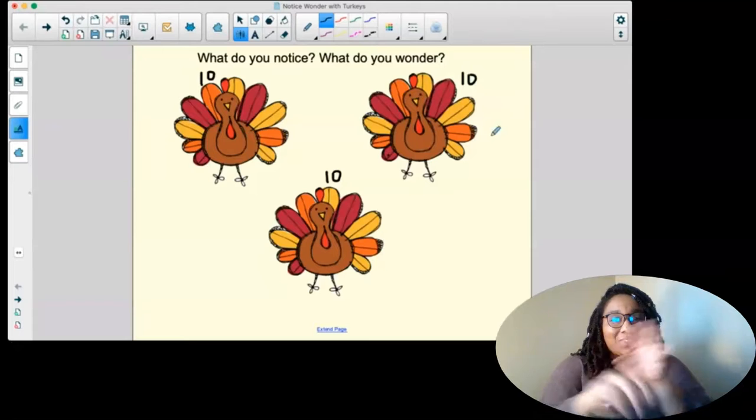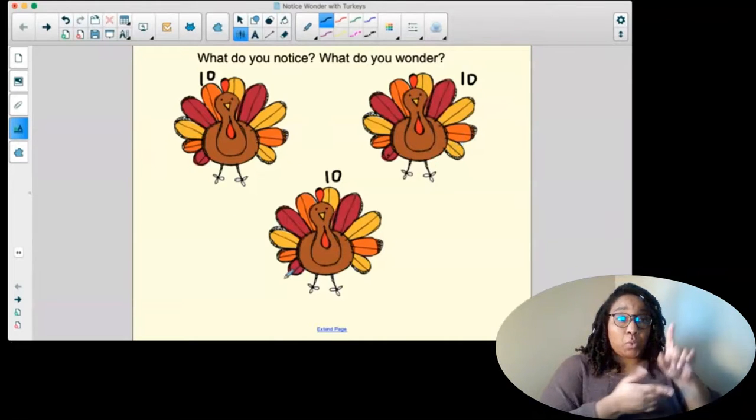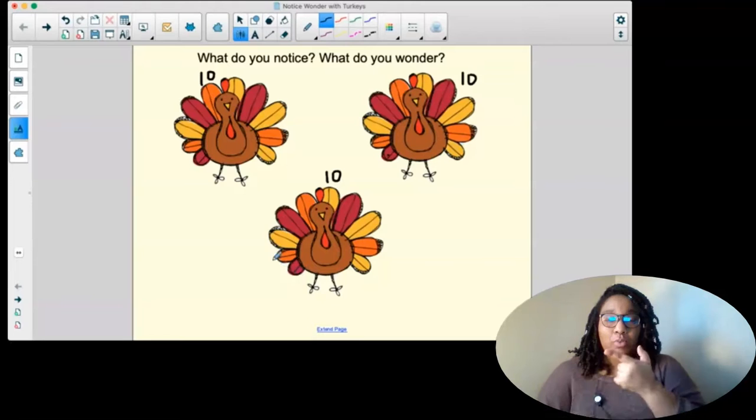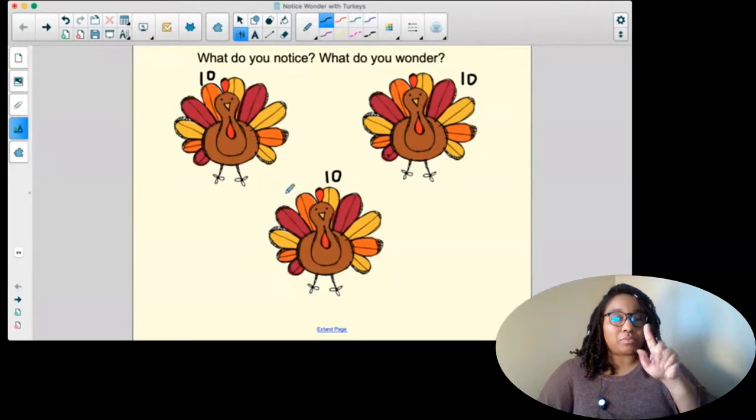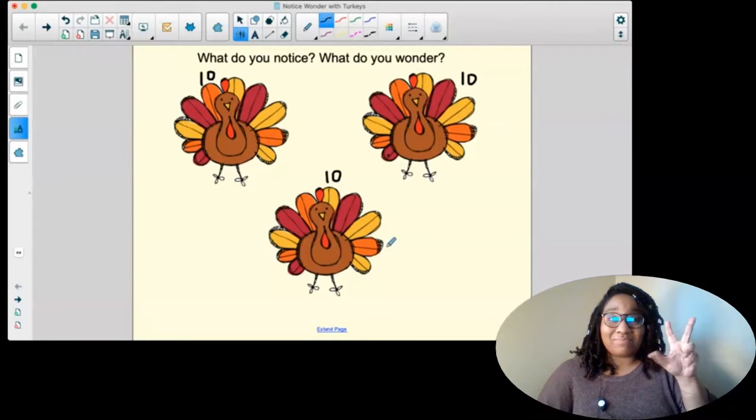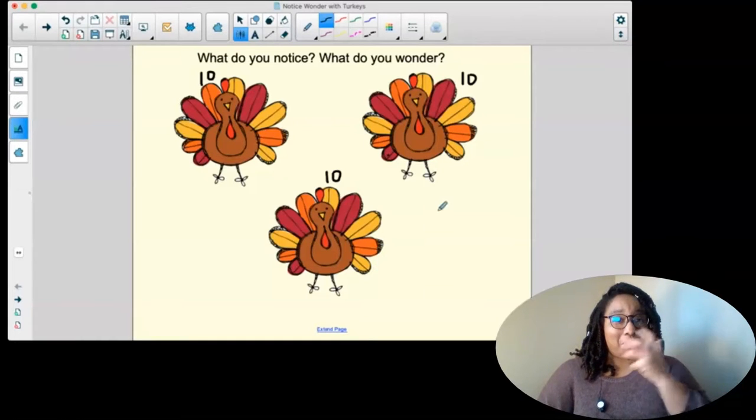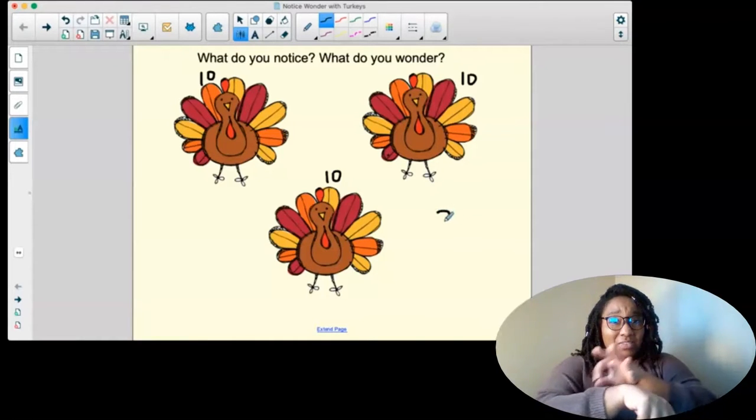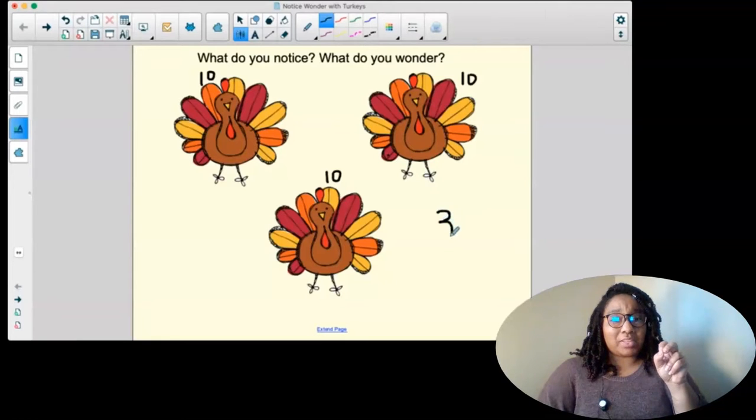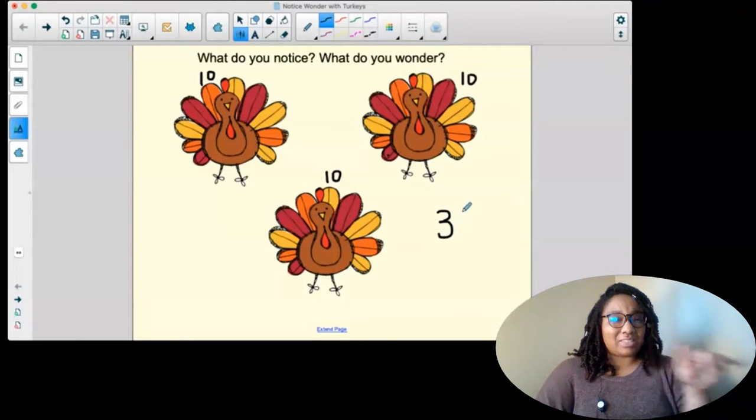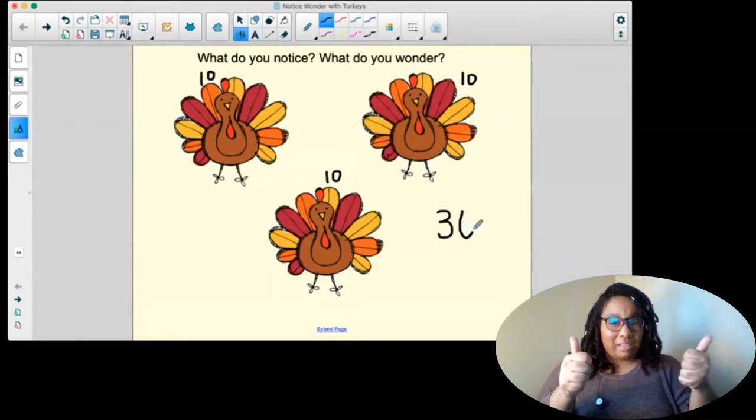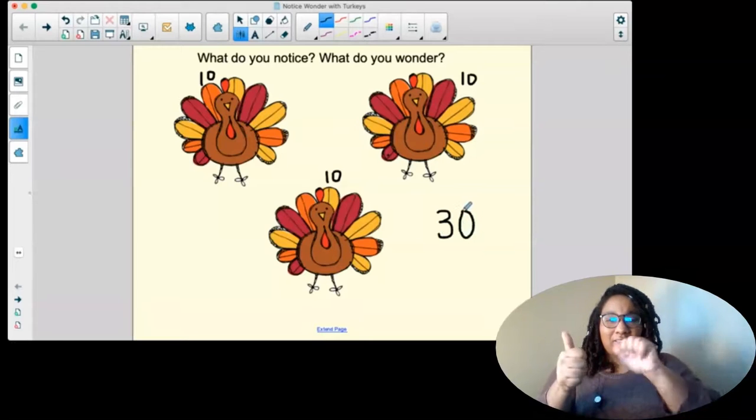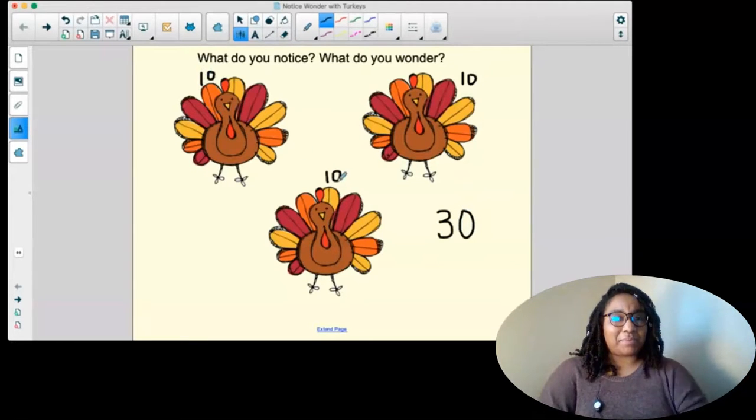Alright, we're going to keep counting. We were at twenty. We're going to start with twenty-one, twenty-two, twenty-three, twenty-four, twenty-five, twenty-six, twenty-seven, twenty-eight, twenty-nine, thirty. Oh my goodness, that is a lot of feathers. So thirty is like three tens. You can actually see each turkey has ten feathers and thirty is made up of a ten, a ten, and another ten.